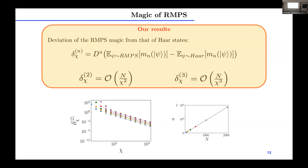Here are our results. We show delta(N, chi), which is basically the deviation of the random MPS magic from the magic of generic Haar states — the difference between them. What we found analytically is that for the second Rényi entropy (N=2), it goes down as N over chi squared, and for the third Rényi entropy (N=3), it goes down as N over chi cubed.